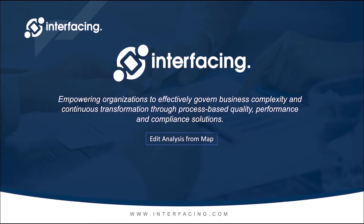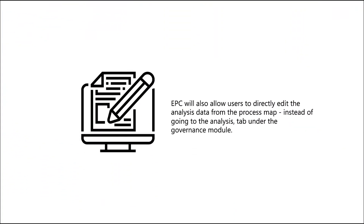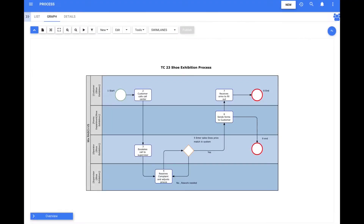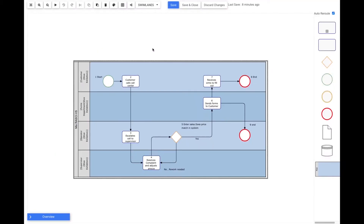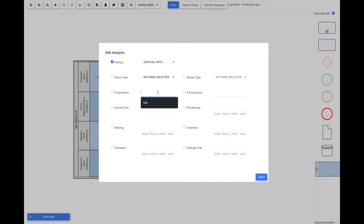Edit analysis from map. In this new EPC release, EPC will allow users to directly edit the analysis data from the process map instead of going to the analysis tab under the governance module. To use this feature, users go to the graph from the process module. When selecting edit analysis, a window opens with all the labels to be edited. Users will be able to enter the new data and once saved, can validate the information entered in the graph.